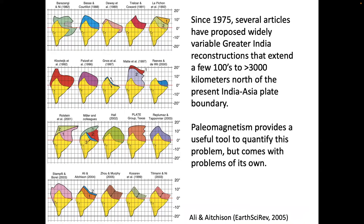This page from the paper shows there are tons and tons of ideas about how big Greater India was — from essentially nothing to quite big. The nice thing is that paleomagnetism provides a useful tool to quantify this problem, but we have problems too.